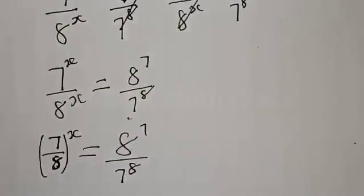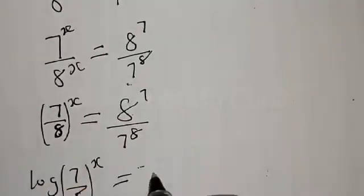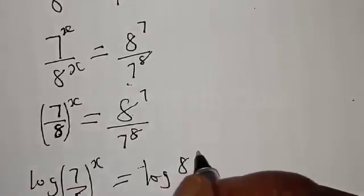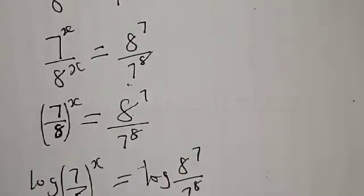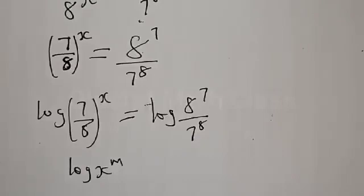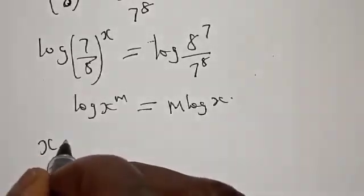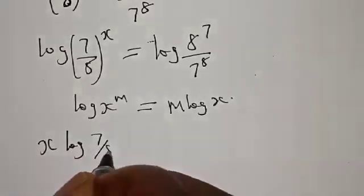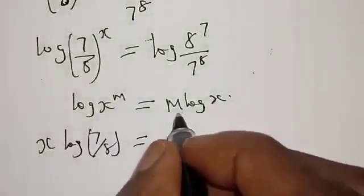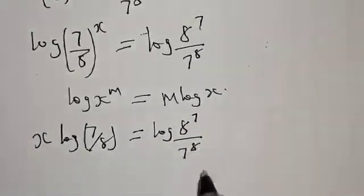Then let's take the log of both sides. We have log of 7 raised to power x over 8 raised to power x is equal to log of 8 raised to power 7 over 7 raised to power 8. Remember, if you have log of a raised to power m, it is the same thing as m log a. Therefore, if you have log of 7 raised to power x over 8, this gives us x log 7 over 8 is equal to log of 8 raised to power 7 over 7 raised to power 8.